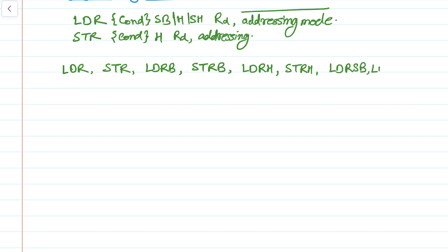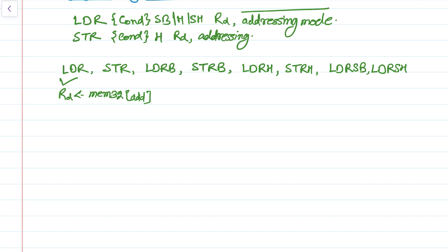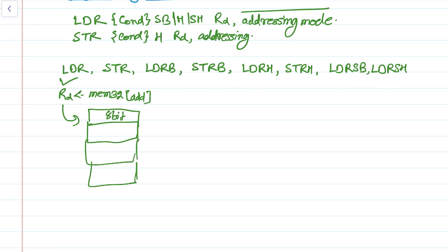We have LDRSH. The normal LDR instruction loads the destination register with a 32-bit memory value. And STR is the normal store instruction which stores Rd — the destination register — into a 32-bit memory address, which is aligned and could be 4 bytes: byte 0, 1, 2, and 3 — a total of 4 bytes of memory.